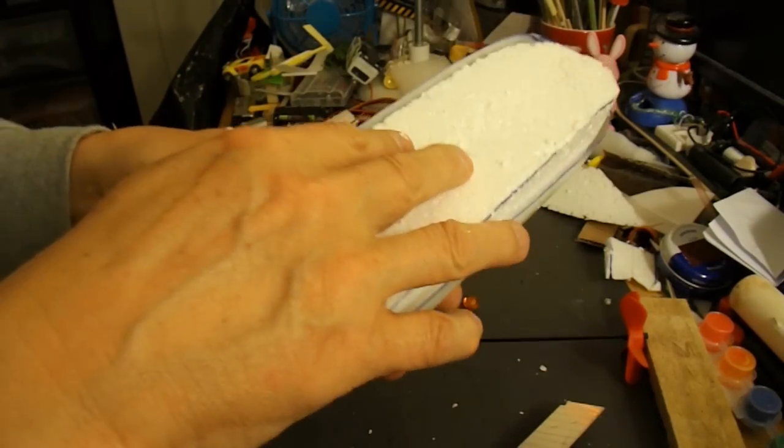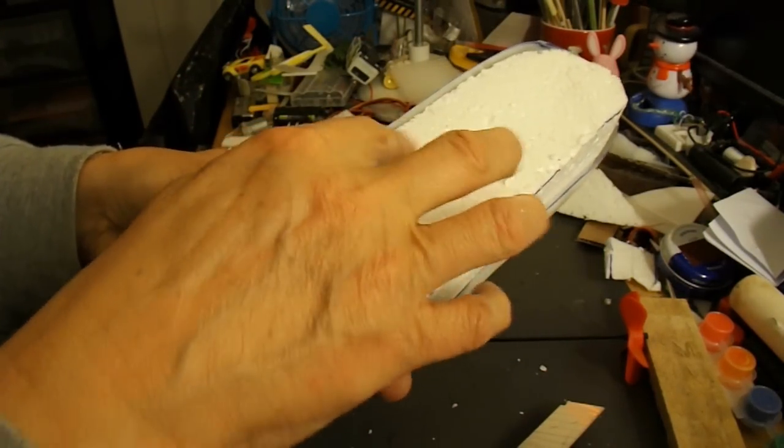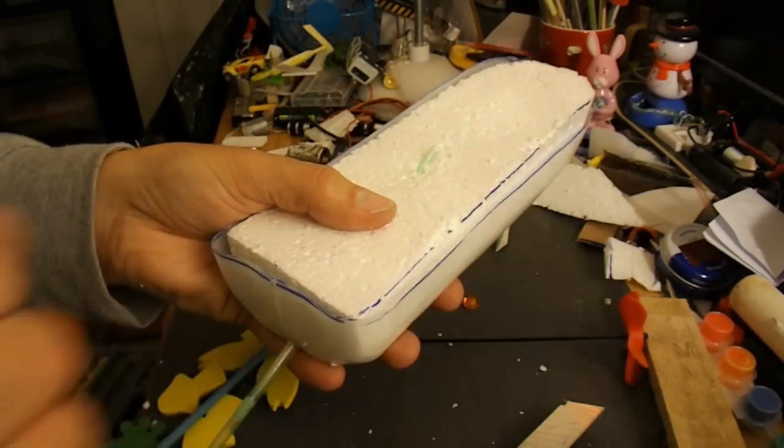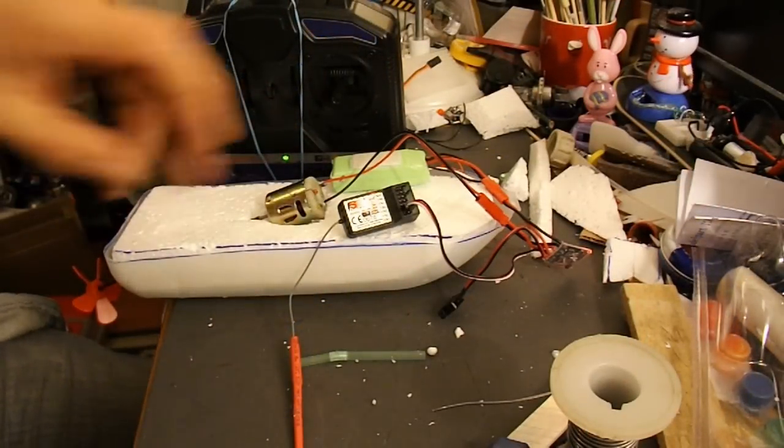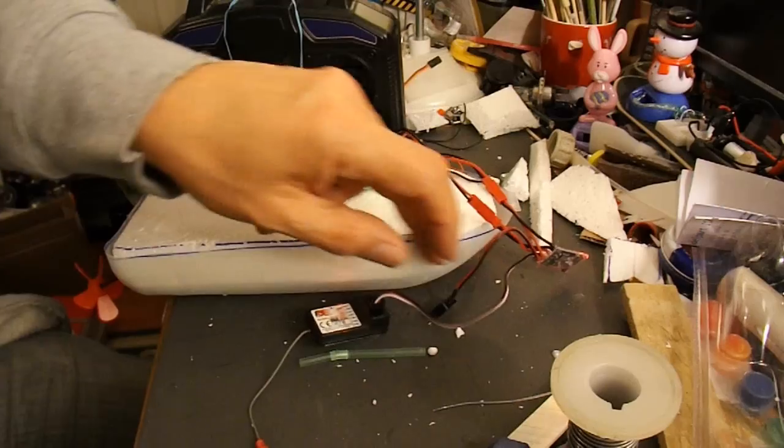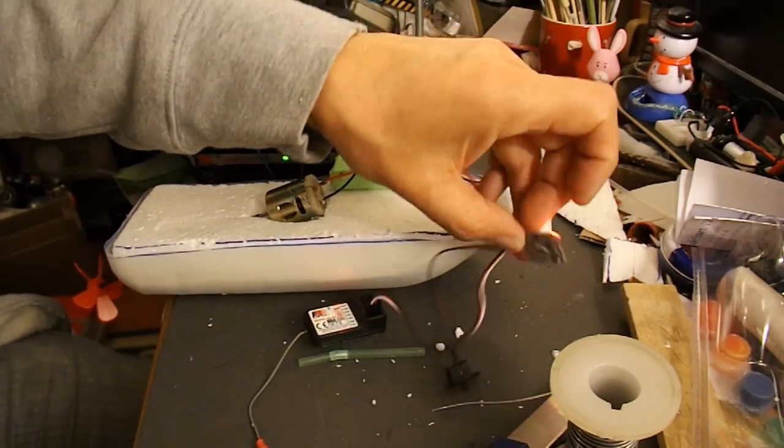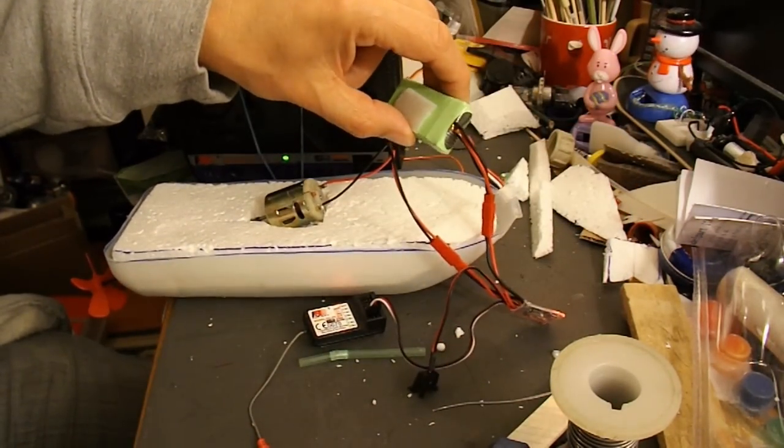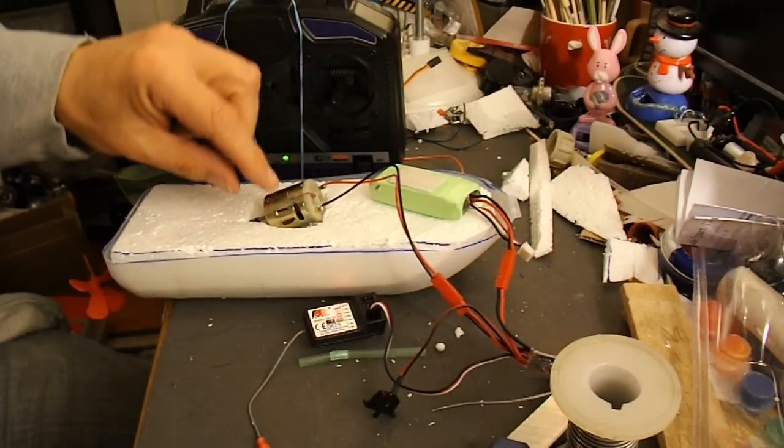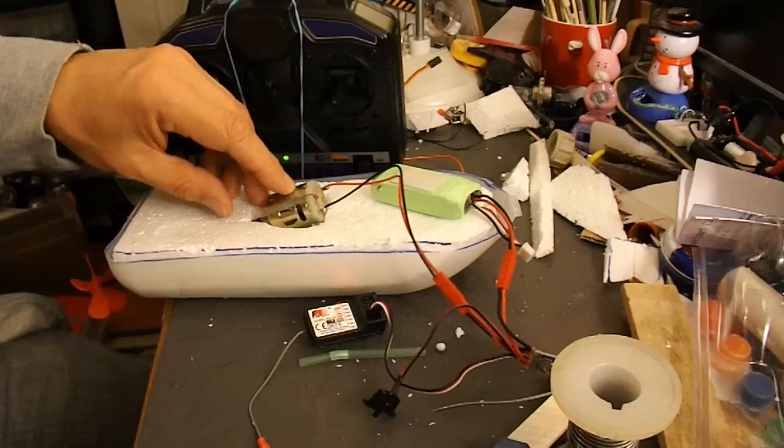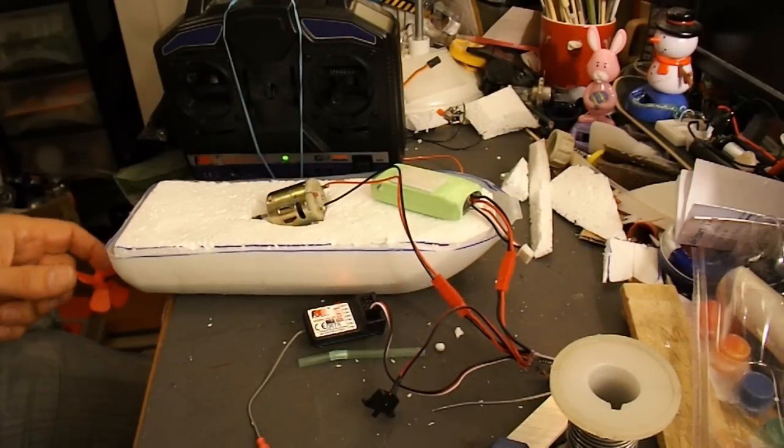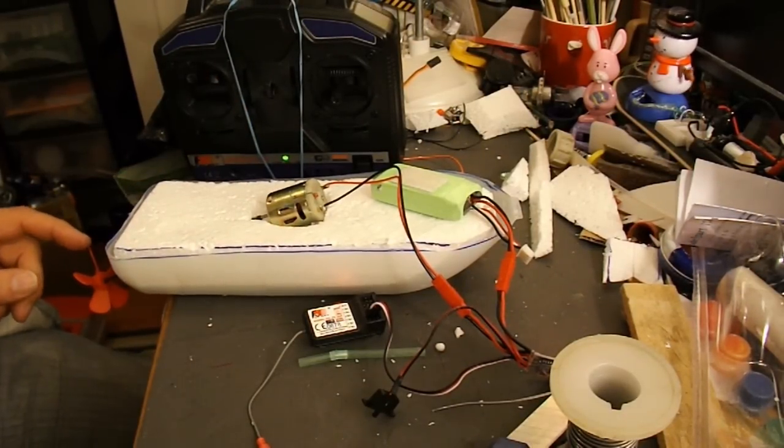I think I'll sink the motor in a little bit. I won't have it up on top, I'll have it down just a little to get the weight down a bit. So there we are: receiver, on-off switch, ESC, two-cell LiPo, hair dryer motor, and fan from the garden ornament.